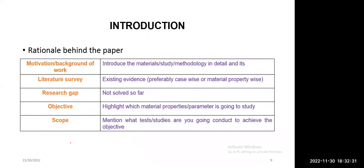The next section is introduction. Introduction gives clear information or background of the study. Introduction is nothing but rationalizing behind our paper. Here also, we will have several steps. The first step is motivation and background of the work. In the abstract, you wrote only in a very small and crisp manner — just maybe one line or one and a half lines of background of your material, study, or methodology. Now, you have a chance to explain very clearly about your work, and those explanations go in the first paragraph of the introduction.